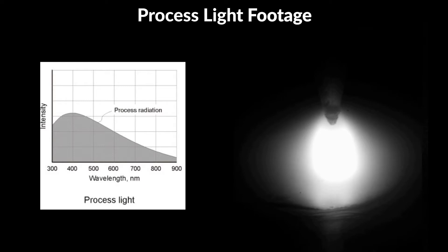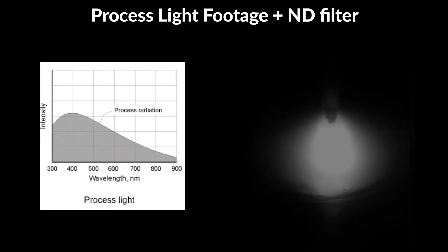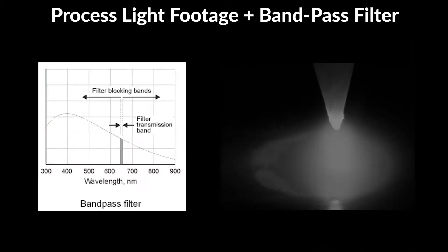The problem with only relying on the process light is that it is often too bright for the camera sensor, which results in saturated images that do not reveal much about the process. One measure to decrease the bright light is to use neutral density filters, but that just means that the dark areas become much darker. To visualize both the hot and the cold regions at the same time, narrowband pass filters can be used, which block specific wavelengths of the process light, resulting in much better images.